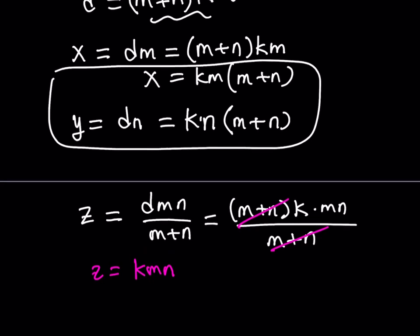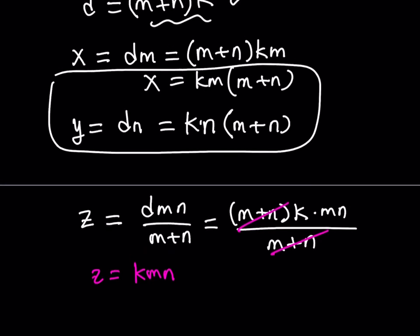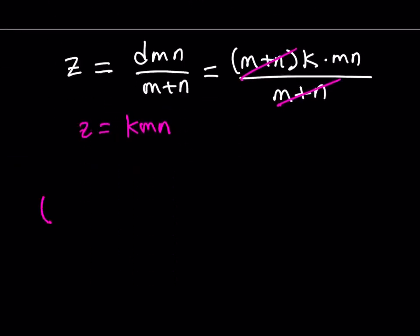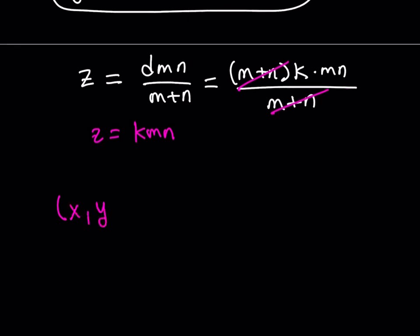So now if you put it all together, basically we're going to be getting our solutions as an ordered triple. Let's go ahead and write it down as an ordered triple. So x, y, z is going to equal km times m plus n,